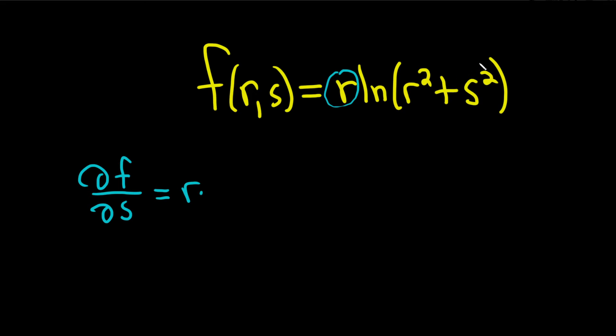So r times, and now the derivative of the natural log. Well, if it was just the natural log of x, and you took the derivative with respect to x, you would just get 1 over x.